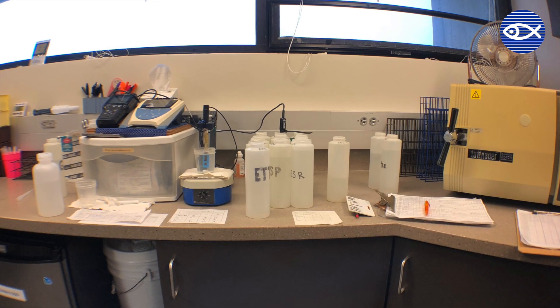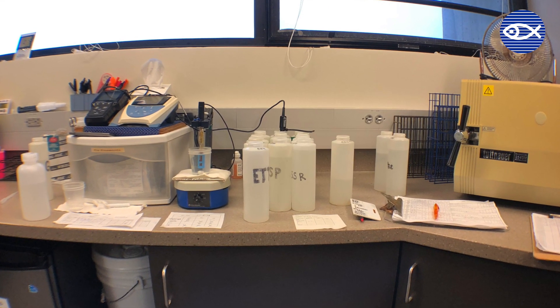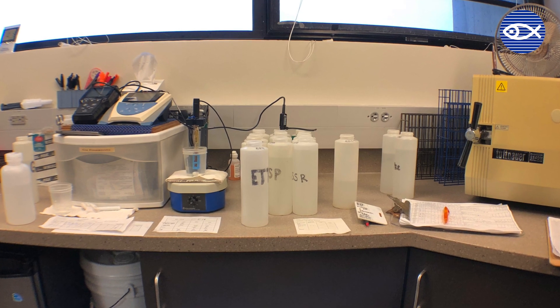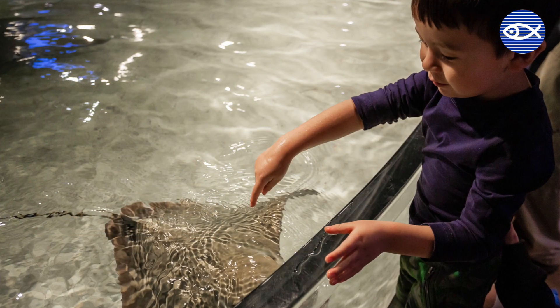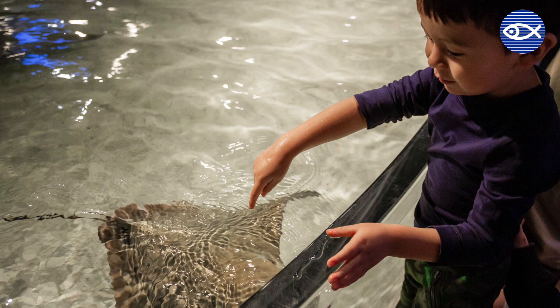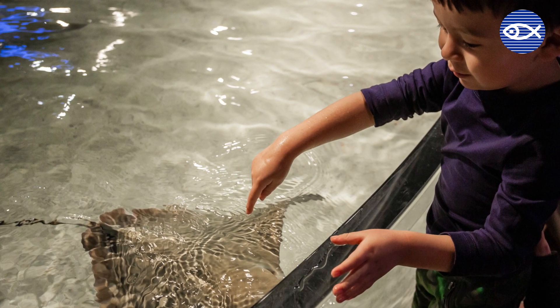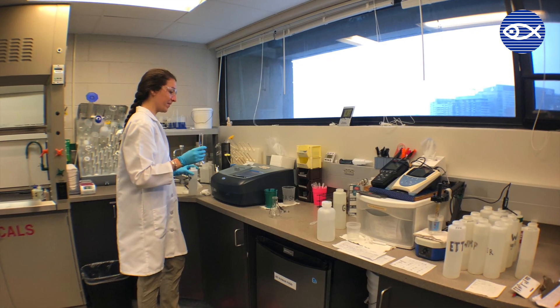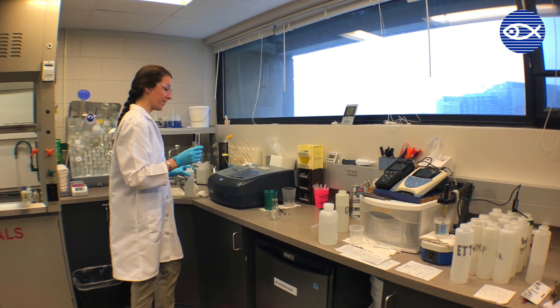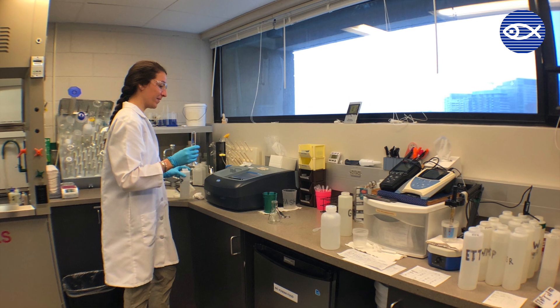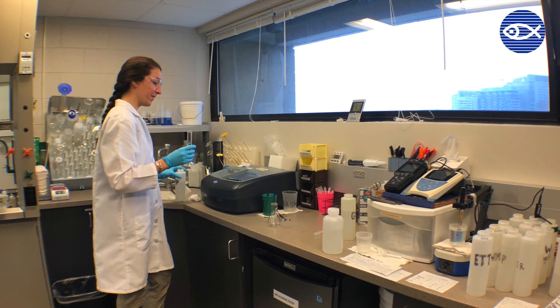We do bacteria testing on all the systems that have people touching them. So like the shark and ray touch tank, for example, people get to put their hands in the tank. So we have to run bacteria tests on that to make sure that it's an okay level for humans to come into contact with. We also run bacteria tests on all the other systems as well, but those ones have the strictest guidelines.